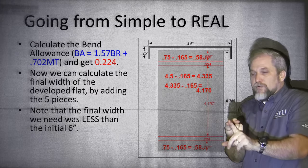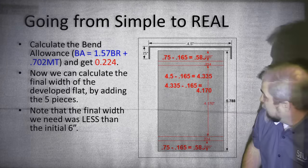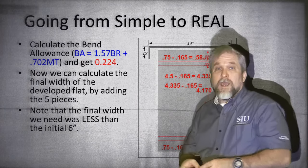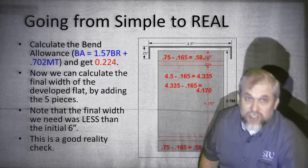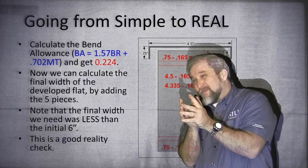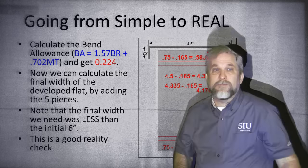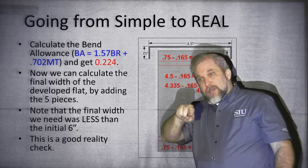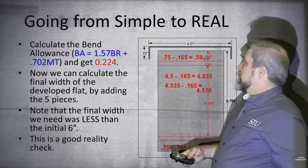That 5.788 inches is how much material we need to make this part in real life. Remember, the mold point dimension said it was going to be 6 inches. This is a good reality check — because if you cut the corner a little bit, you should come up with a little less than you had before. If you come up with more, you're doing something wrong. Check your math. The sharper you cut the corners, the less material you're going to need.